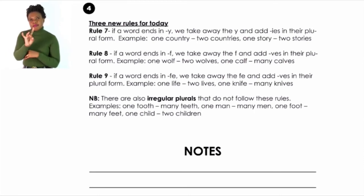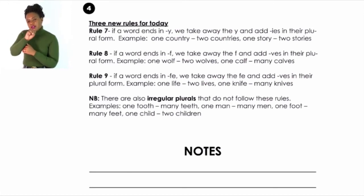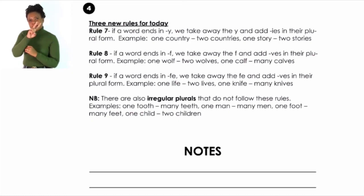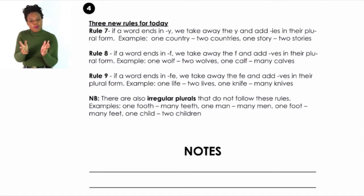Rule eight: if a word ends in F, take away the F and add VES. For example, wolf — the F is replaced with VES — becomes wolves. Curve becomes curls. Remember there are also irregular plurals that do not follow the rules — some nouns change completely.